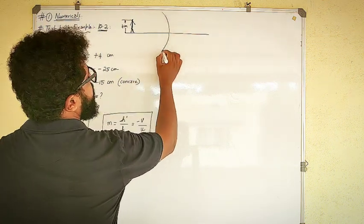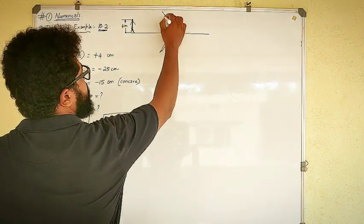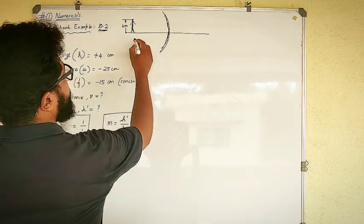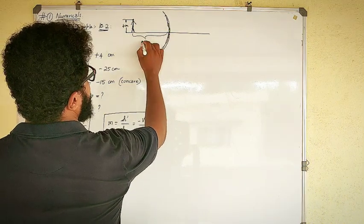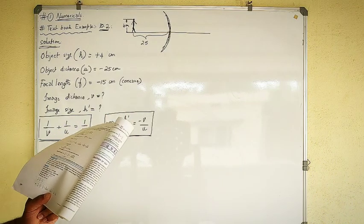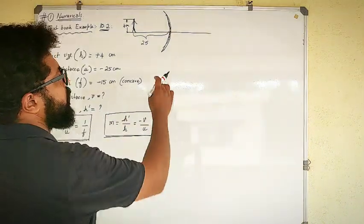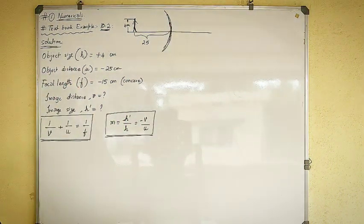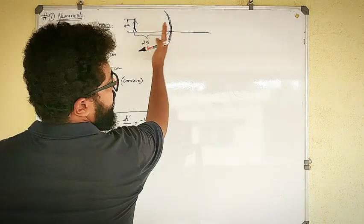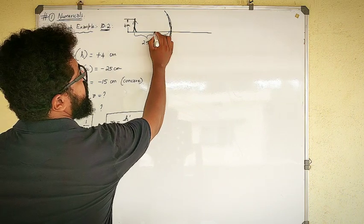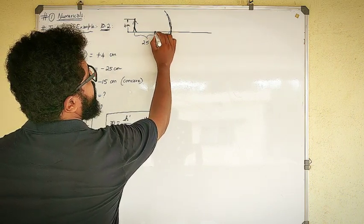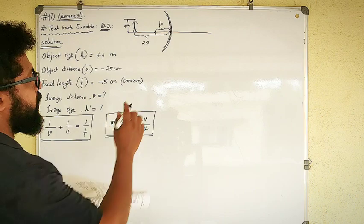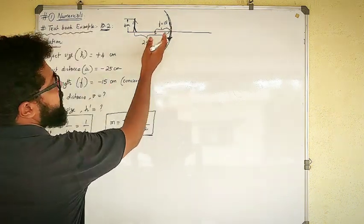I will draw a concave mirror right here. This concave mirror — the object is placed at 25 cm in front of it, and the focal length is 15 cm. The focal length of a concave mirror is to the left side, so the focal point is marked there, and the focal length F is given as 15 cm.